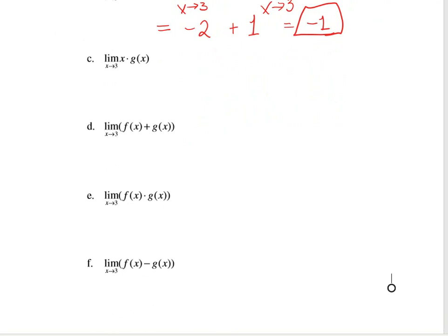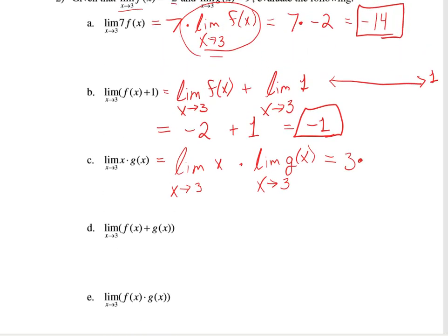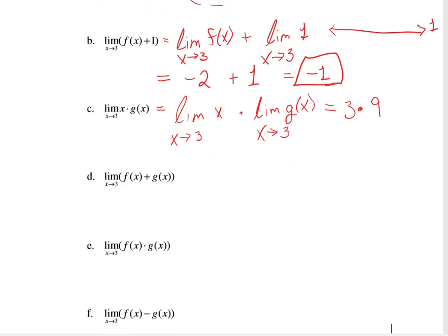For the next one: what is the limit of x·g(x) as x approaches 3? By the fourth rule, we can split this into the limit of x as x approaches 3, times the limit of g(x) as x approaches 3. The limit of x as x approaches 3 is just 3 — you can verify that graphically or numerically. And we know the limit of g(x) as x approaches 3 is 9. So our solution is 3 × 9 = 27.